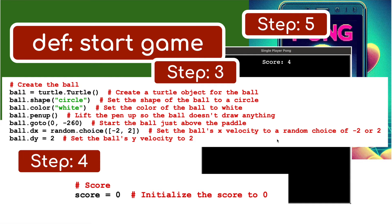Then we can change the velocity to a random choice - minus two or two - and set the ball's y velocity to two. So we're going to set the x velocity and the y velocity. And then we've got to set the score - score equals zero. It's going to start on zero.